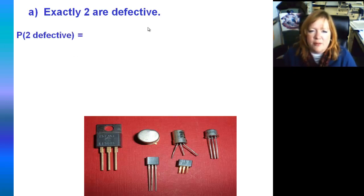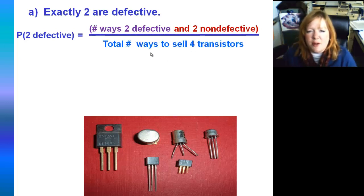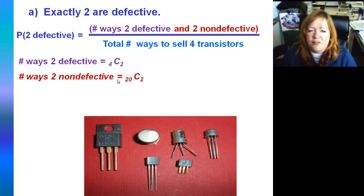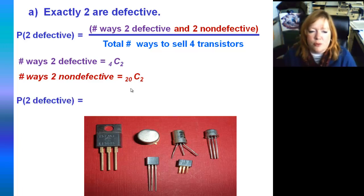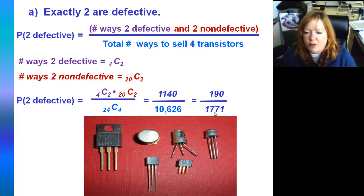If we want exactly two defective, the probability of two being defective is the number of ways two are defective AND two are not defective. The number of ways two are defective: since only four are defective, it's four choose two. The number of ways two are non-defective: there are 20 non-defective transistors, so it's 20 choose two. The probability is four choose two times 20 choose two, all divided by 24 choose four — which gives 1,140 out of 10,626, or 190 out of 1,771 in lowest terms.